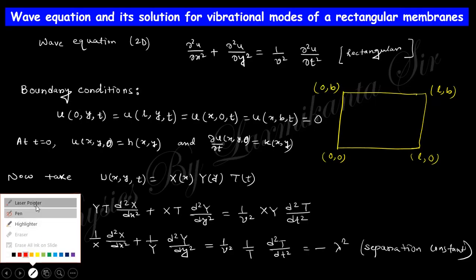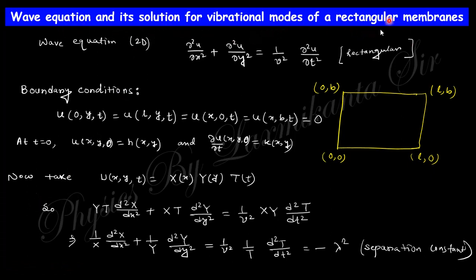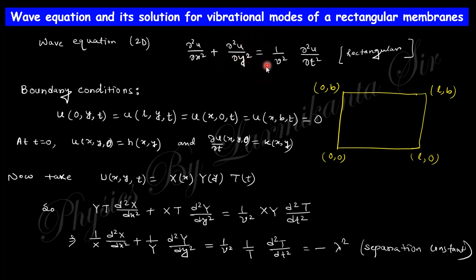Today's lecture is the wave equation and its solution for the vibrational mode of a rectangular membrane. Suppose you have a rectangular membrane whose boundaries are: this corner is (0,0), and the opposite corner is (l, b), meaning its length is l and the breadth is b. This is a two-dimensional plane, so we use a rectangular Cartesian coordinate system. The Laplacian operator can be written as shown — in three dimensions there would be a z-term also, but here we go up to two dimensions.